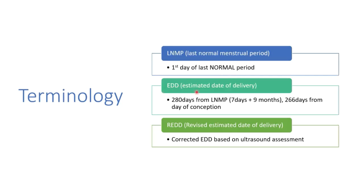EDD means estimated date of delivery. It is counted based on this formula: 280 days from your LNMP, which means you add 7 days plus 9 months. For example, if your LNMP is 1st of January, you add 7 days and 9 months, which gives you 8th of October. There is also 266 days from the day of conception — from fertilization. The 14-day difference exists because ovulation occurs at day 14 of menses, when the sperm meets the ovum. Some patients get pregnant with IVF and you need to calculate from there, but that calculation is not covered in this lecture.